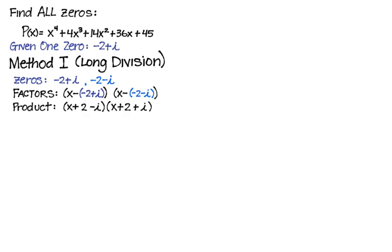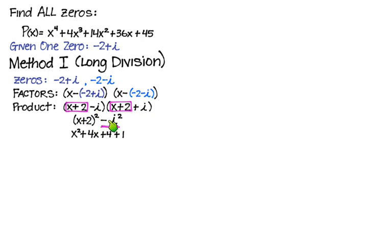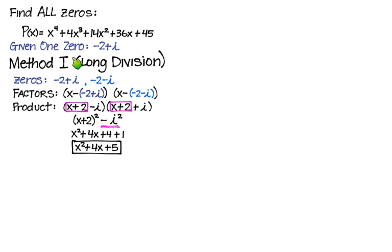By multiplying these factors, we simplify. We notice we have x plus 2 in both expressions. This is no different than a plus b times a minus b, which is the difference of two squares. So we get (x plus 2) quantity squared minus i squared, which is minus negative 1, which we write as positive 1. And when we simplify, we have the quadratic x squared plus 4x plus 5. And this is a factor of the original polynomial.